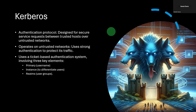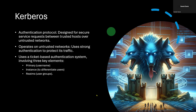Kerberos is an authentication protocol primarily designed for when you have a trusted host over an untrusted network. It uses stronger authentication to protect its traffic and a ticket-based authentication system involving three key elements: primary, instance, and realms. The primary is associated with usernames, the instance with differentiating users, and the realms with user groups. In mythology, Kerberos was a three-headed dog that guarded the gates to the underworld — so Kerberos is an authentication protocol that guards our systems using three key elements.